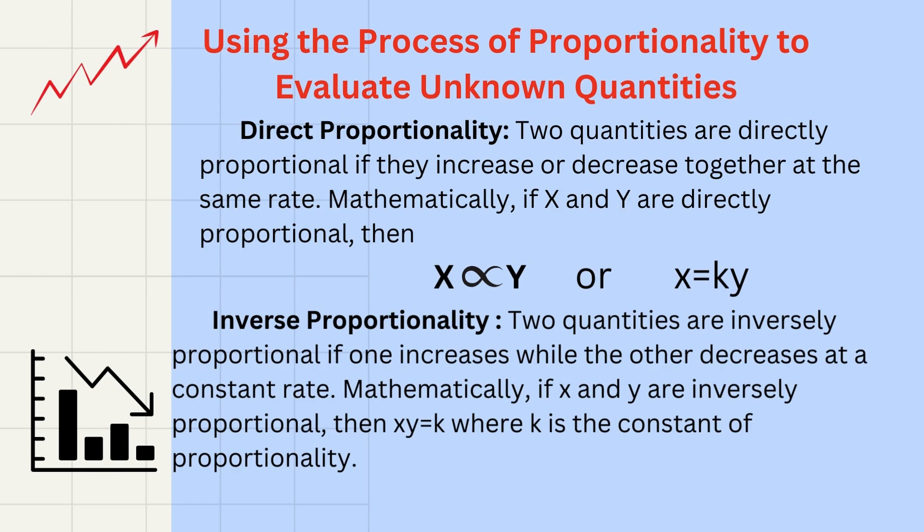Proportionality is a fundamental concept in mathematics that describes how two quantities change relative to each other. Proportionality could be direct proportionality, which means that two quantities are directly proportional if they increase or decrease together at the same rate. The other type could be inverse proportionality. Two quantities are inversely proportional if one increases while the other decreases at a constant rate.